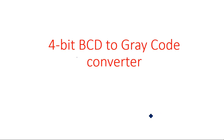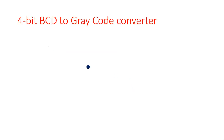In this video I am going to explain about the logic circuit diagram implementation for a 4-bit BCD to Gray code converter. For any code converter we need to follow three steps: first is the truth table, second is K-maps, and third is writing the expressions and then the logic circuit diagram.